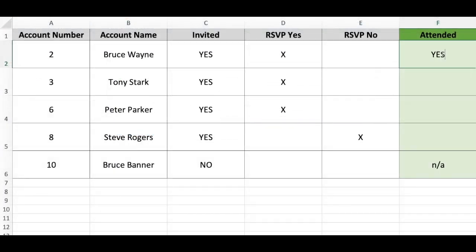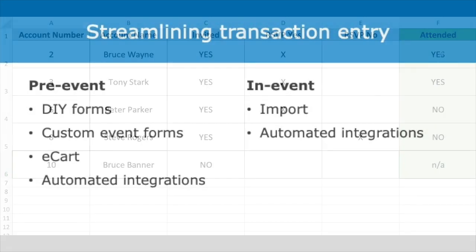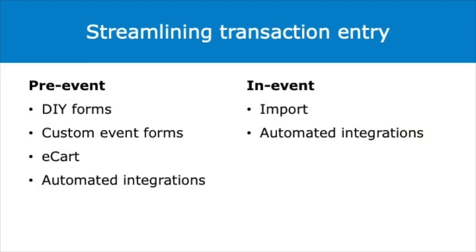If you are tracking attendance, export the RSVP or registration list from eTapestry to Excel with the account number for each potential attendee. Take the Excel sheet on a laptop to the event and flag each account that attends. Import the data post-event to create an attendance record for each account that attended. Most pre-event steps can be streamlined with eTapestry DIY forms, custom event forms, or the eCart. Some events are more robust and require other event management systems.